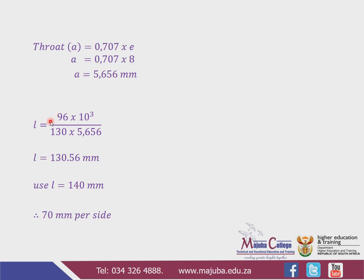Substituting into the formula: force is 96 multiplied by 10³ Newtons, divided by the stress of 180 MPa — because the grade given is 43 — multiplied by the throat of 5.656. The effective length works out to 130.56 millimeters. We round up, not down, because this is the minimum. We cannot use 130 mm as it would be less than the minimum, so we round up to the nearest ten.